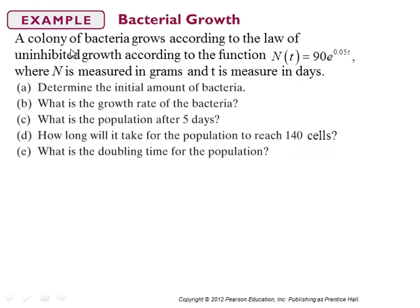Suppose that we have a colony of bacteria that grows according to the law of uninhibited growth, given by N(t) = 90e^(0.05t), where N is measured in cells and t is measured in days. We're going to answer these questions: determine the initial amount of bacteria, determine the growth rate, find the population after five days, find how long it will take for the population to reach 140, and what is the doubling time.